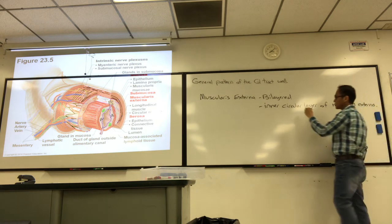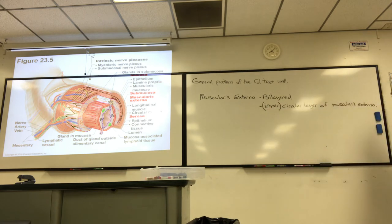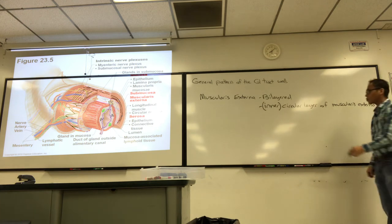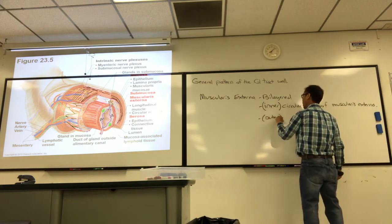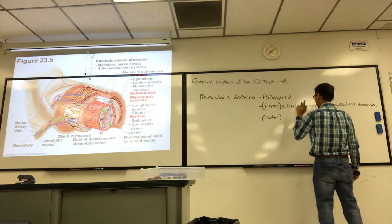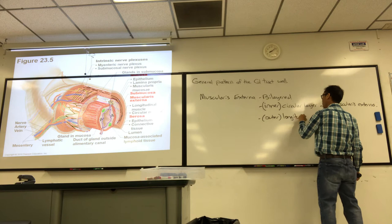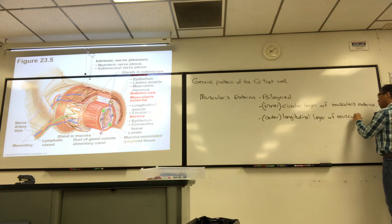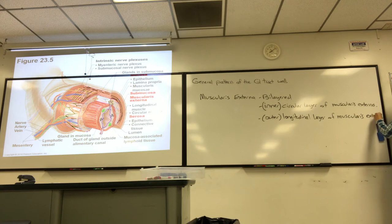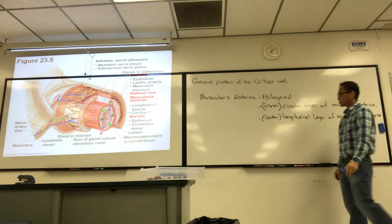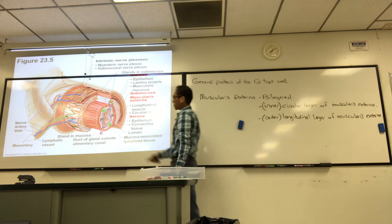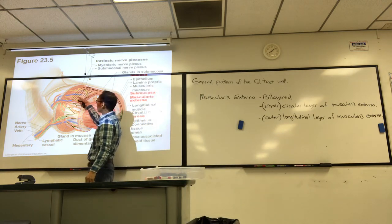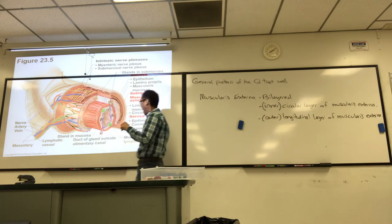So the proper names: circular layer of muscularis externa — it's always the inner layer — and the outer layer is the longitudinal layer of muscularis externa. In between the layers, there are nerve fibers called the myenteric plexus.